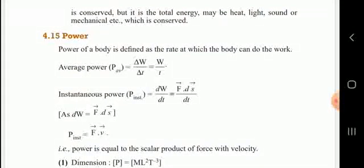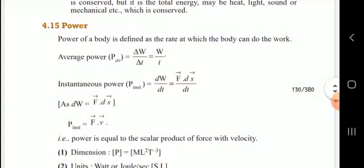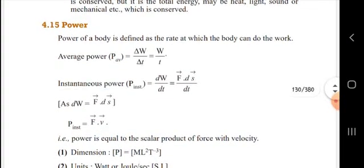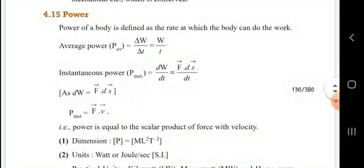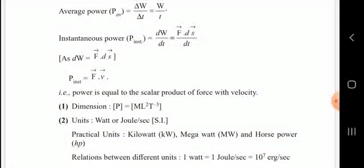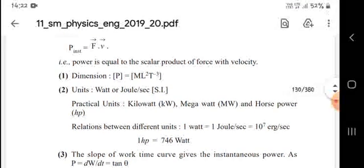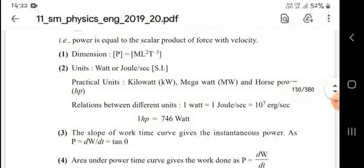Next, power. The power of a body is defined as the rate at which the body can do work. Power P = ΔW/Δt = W/t (work done divided by time taken). Instantaneous power equals F · ds/dt, which means power equals the scalar product of force and velocity. The unit of power is watt (joule per second), and its dimension is ML²T⁻³.